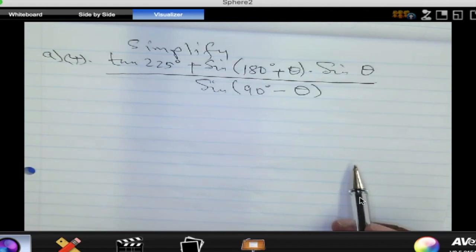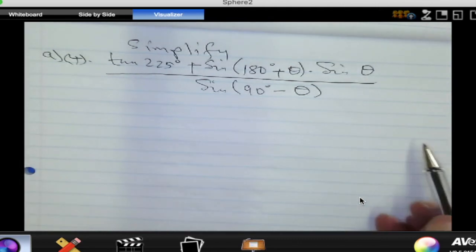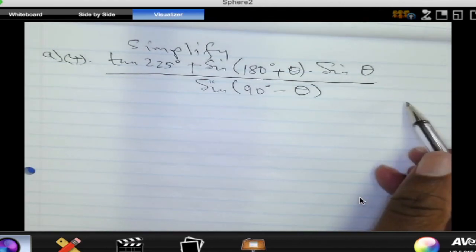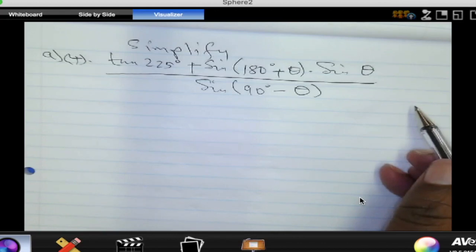Right, so tan 225. I think we know a lot about that now. 225 is in quadrant 3, right? And so, if it is in quadrant 3, we can write it as 180 plus something. What do we add to 180 to get 225? 45.